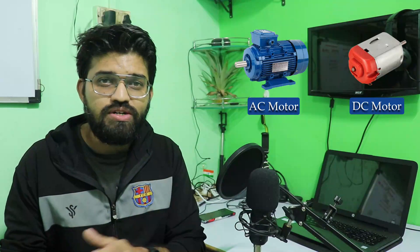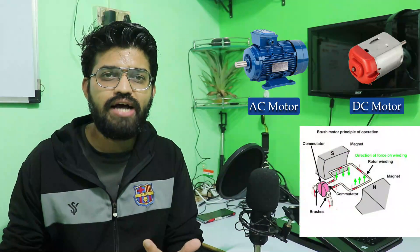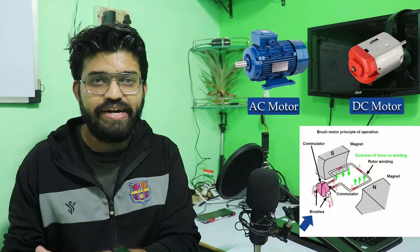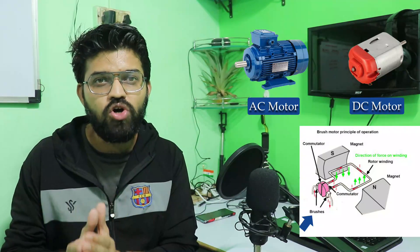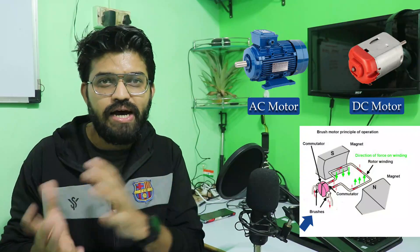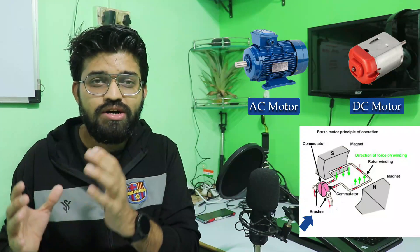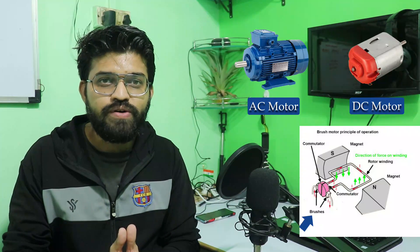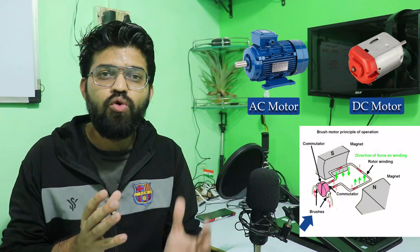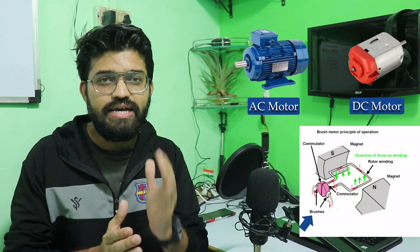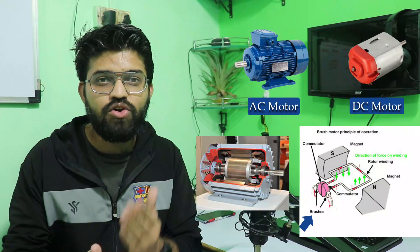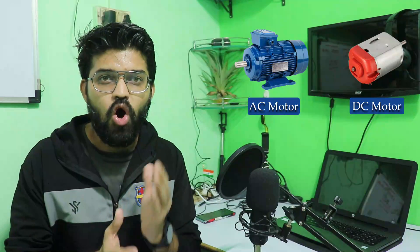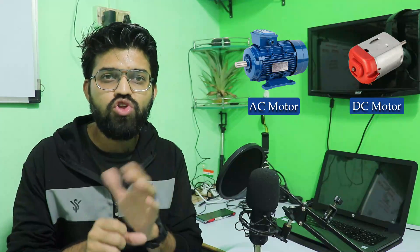DC motors require carbon brushes and commutator rings, so more moving and contact parts are added, which is why manufacturing cost is higher for DC motors. Comparing the same size AC and DC motor, the DC motor will cost more due to these additional moving contact parts. In the AC induction motor there are no contact parts, no carbon brushes, and no commutator rings.